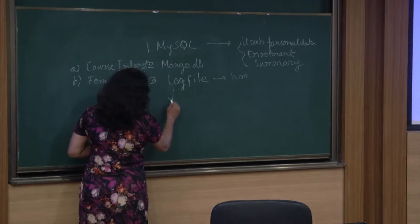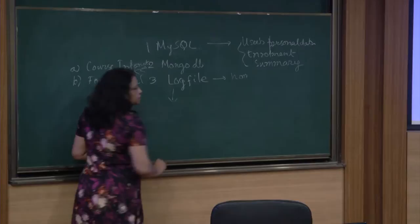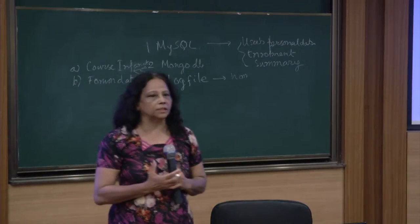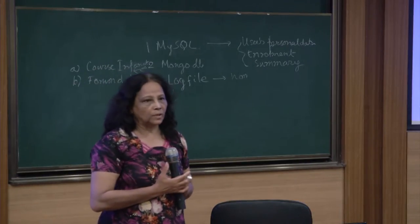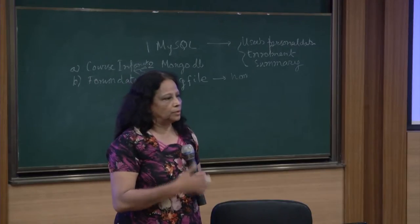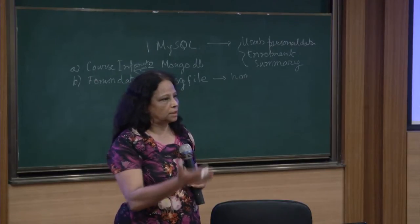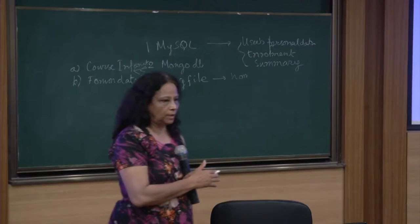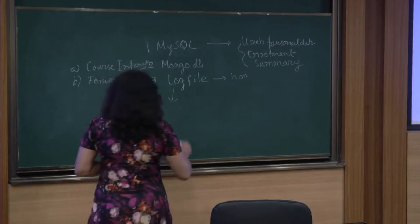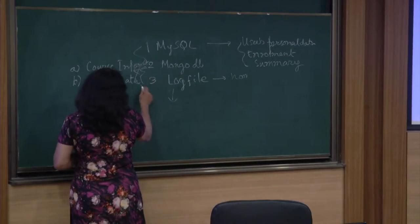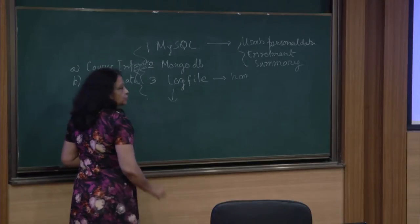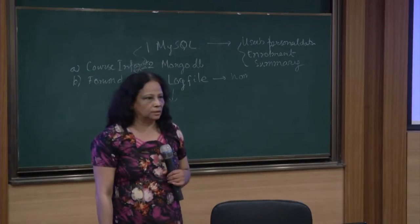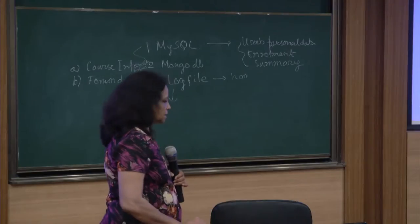And the third is the log file. The log file is normally user access data — it is users' navigation data. Every time a user accesses, the corresponding log entry is generated in the log file. So these are the three basic kinds of data which we will be working with. This is about the data concept.